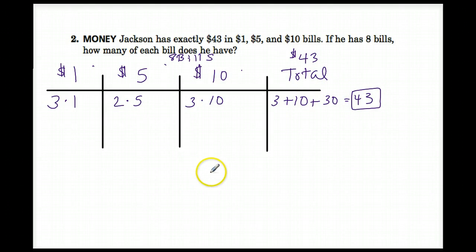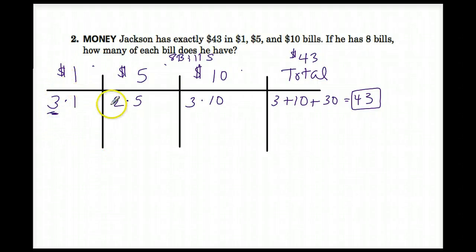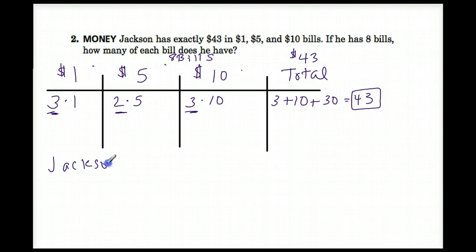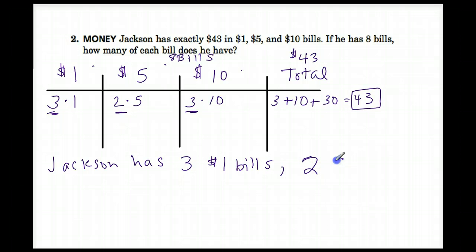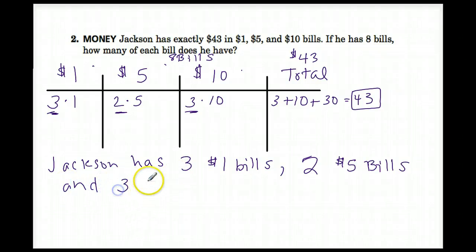That was a lucky guess. So we know if he has 8 bills, how many of each? He has three $1 bills, two $5 bills, and three $10 bills. We want to re-write our answer: Jackson has three $1 bills, two $5 bills, and three $10 bills. And we're done!